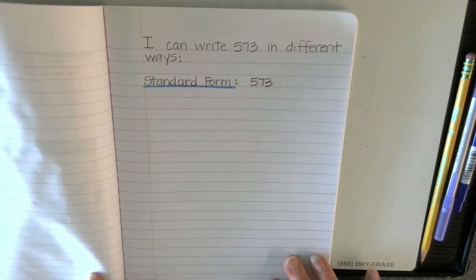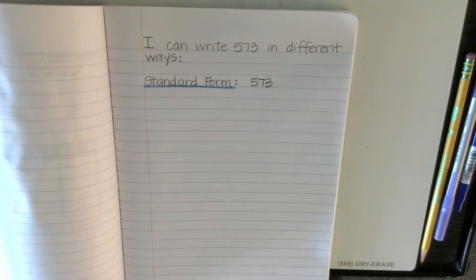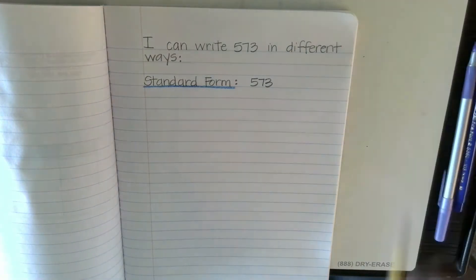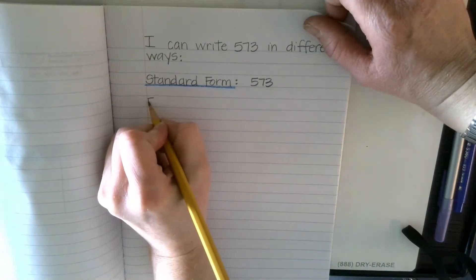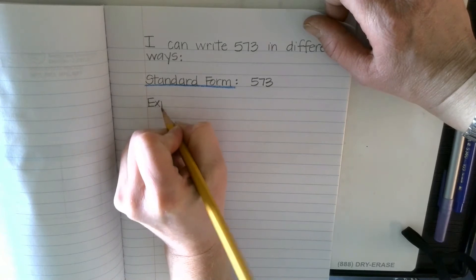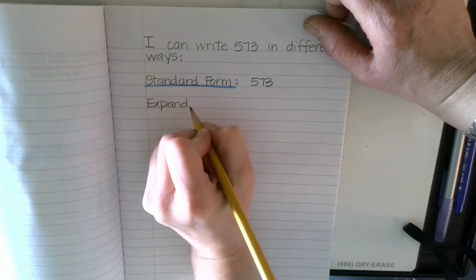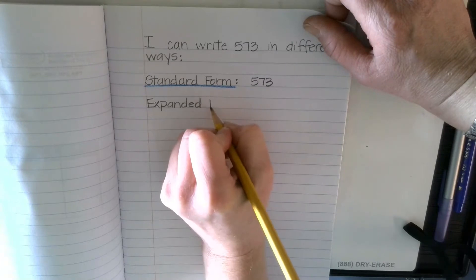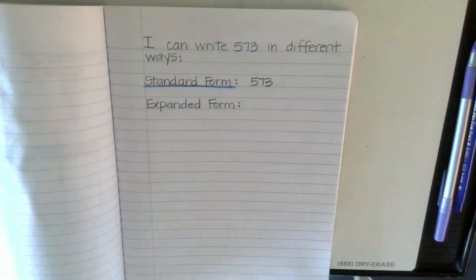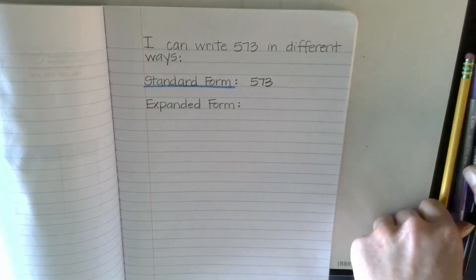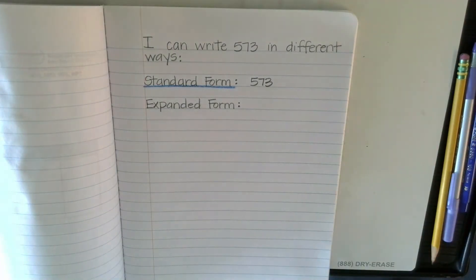Now I'm going to skip a line and we're going to write it in expanded form. Remember, expanded form is when we stretch it out and we write the values. And you should have no problem spelling these words because these were on our spelling list. So let's underline expanded form with a red.